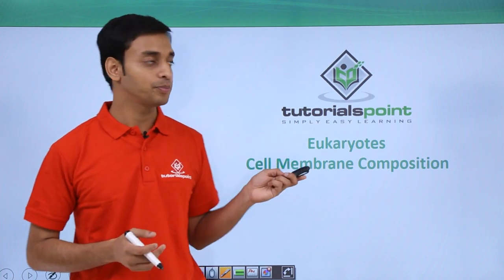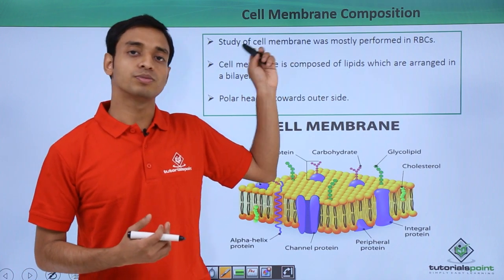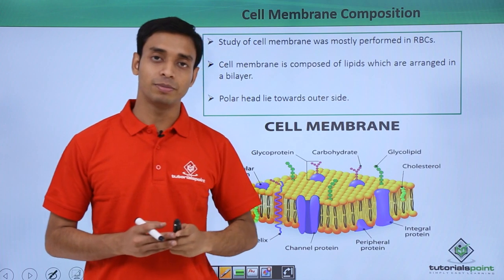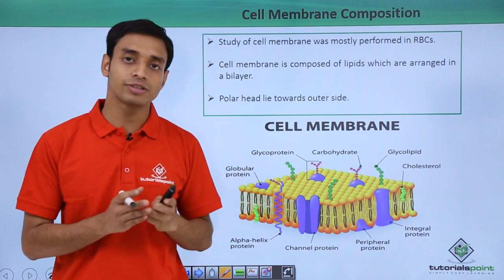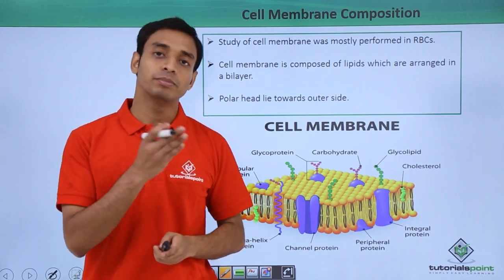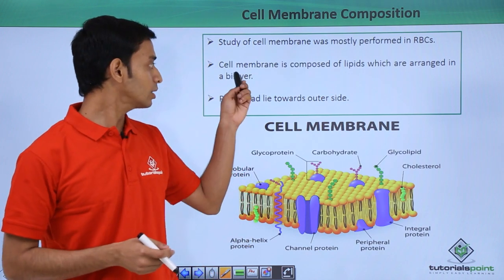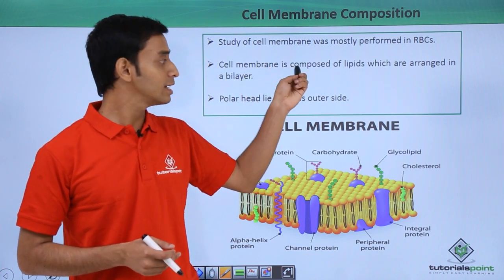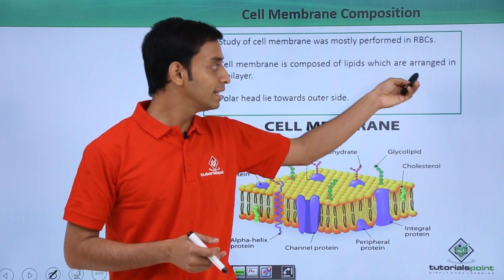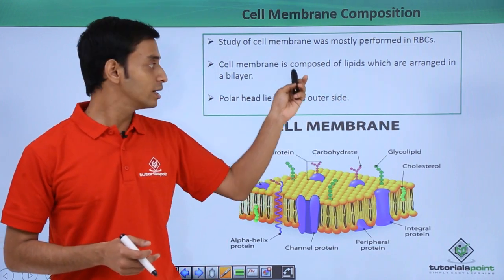The study of the eukaryotic cell membrane was mostly performed using human red blood cells, so all these findings were based on studies of human red blood cells. The cell membrane of eukaryotes is composed of lipids arranged in a bilayer.